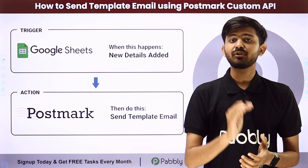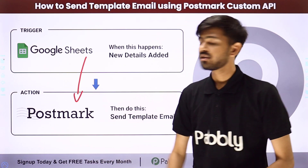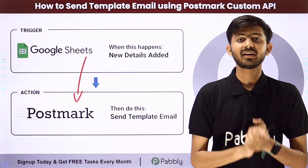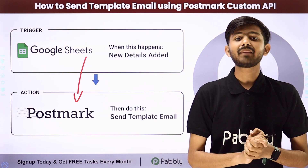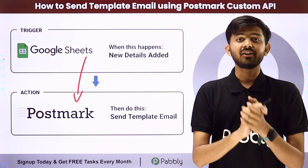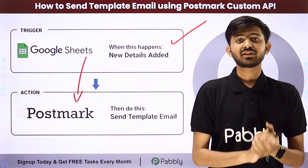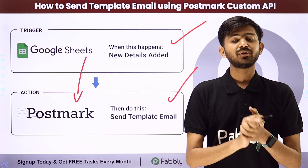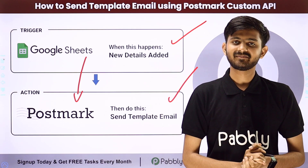For my objective, I have to build a connection between Google Sheets and Postmark. For creating this connection, I'm going to use Pabbly Connect, which is an amazing software for automation and integration. In Pabbly Connect, I'm going to use Trigger and Action. In the Trigger application, I'm going to use Google Sheets, and in the Action application, I'm going to use Postmark. Let me take you to my computer screen.